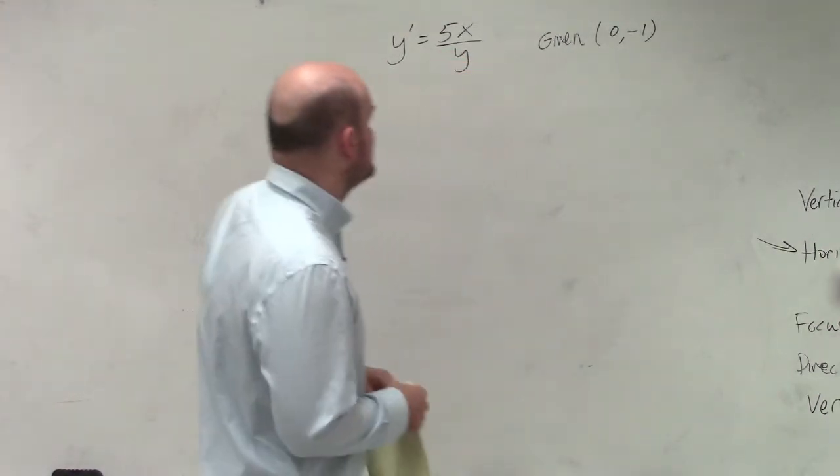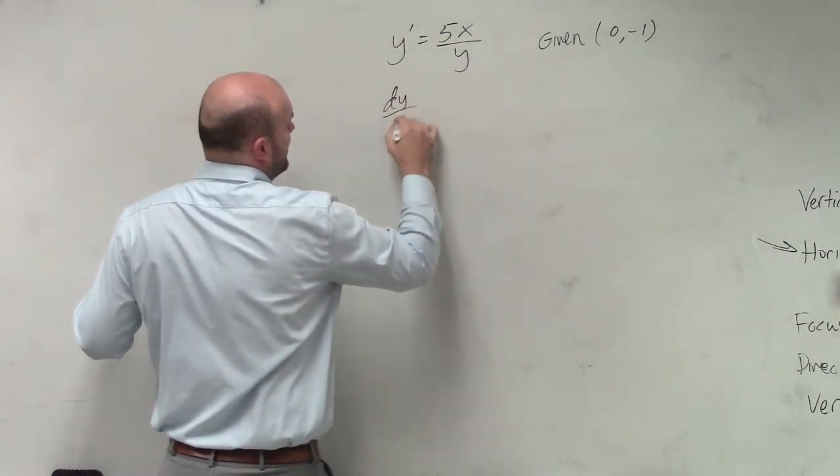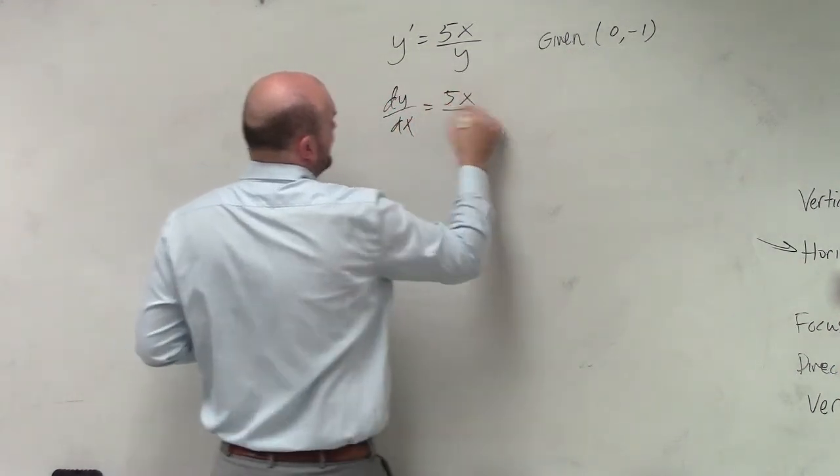So in this example, first thing you guys remember, y prime is the same thing as dy over dx equals 5x over y.